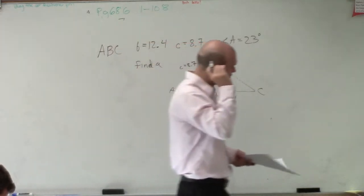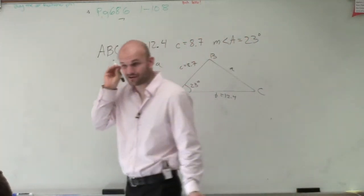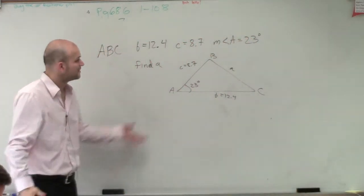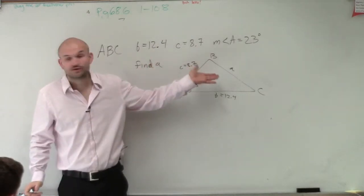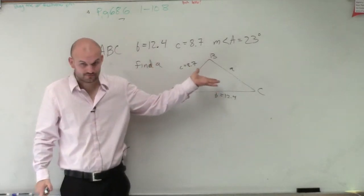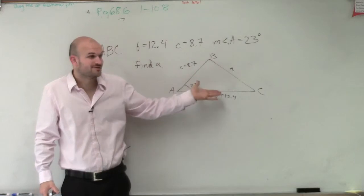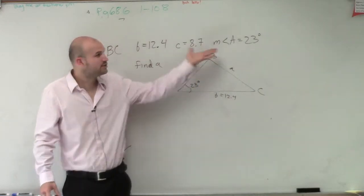Now the next thing we need to do is figure out our values. Remember, if it was a right triangle, we could do sine, cosine, and tangent, right? But we don't know if it's a right triangle. We can't prove that. We only know one angle.